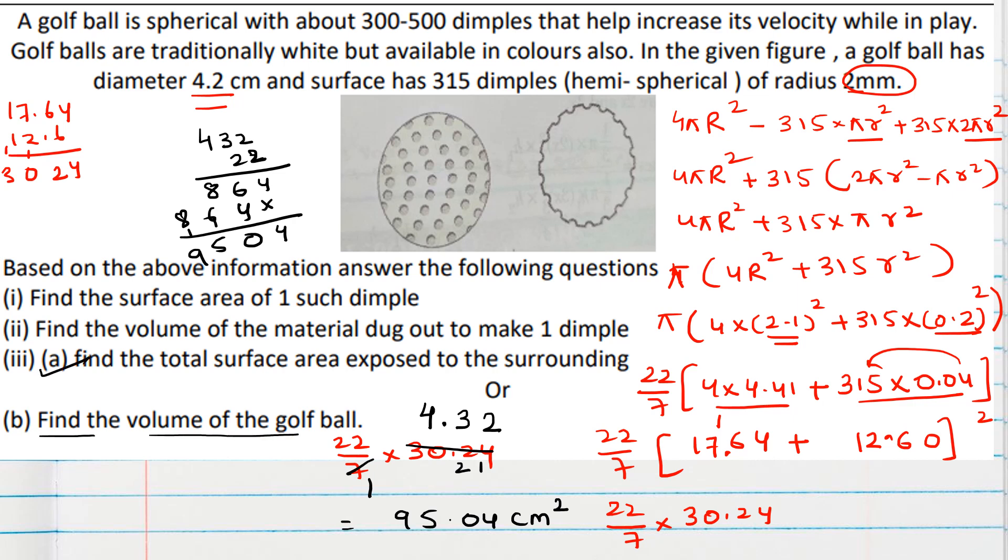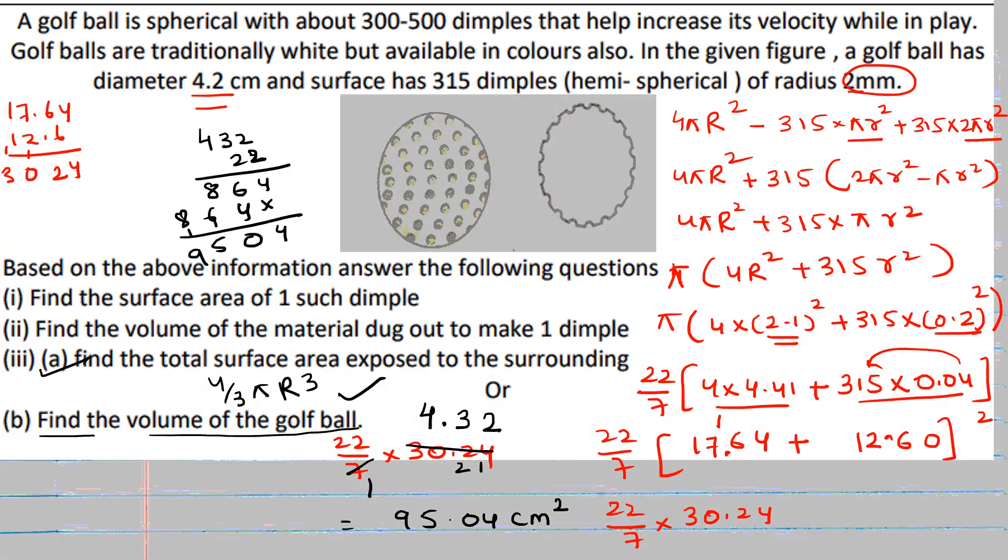For the second bit, find the volume of the golf ball. 4/3 πr³ formula can be used, and that can be done easily. So that is up to you, you can solve. So I hope you understood the case study. Thank you. Thank you so much.